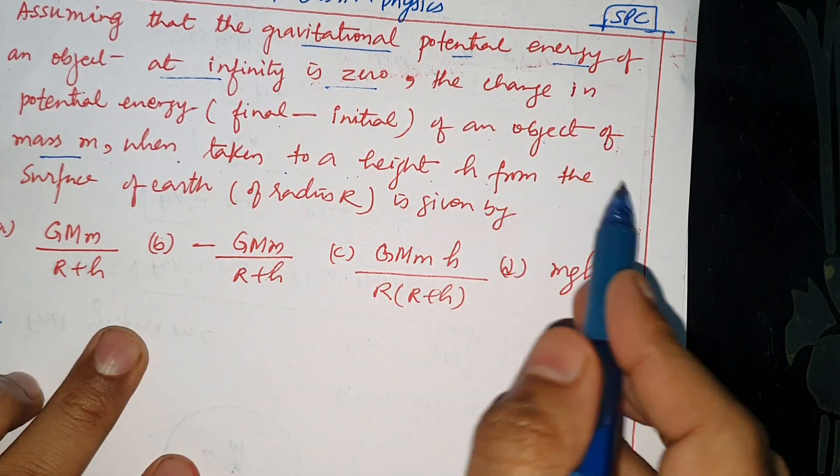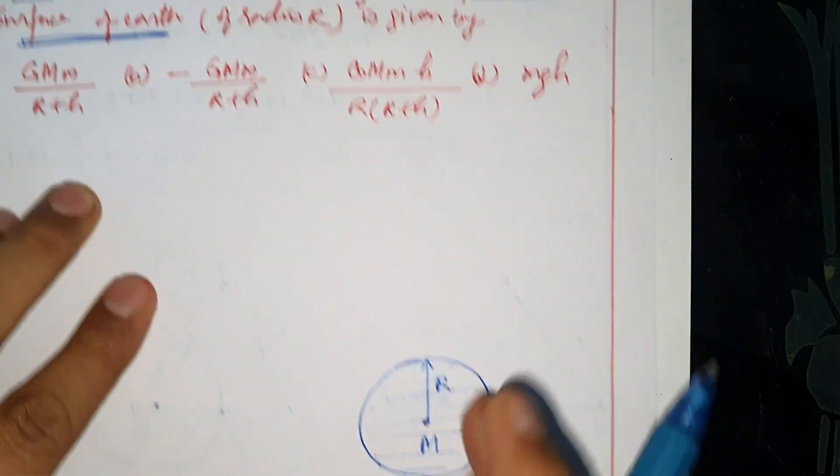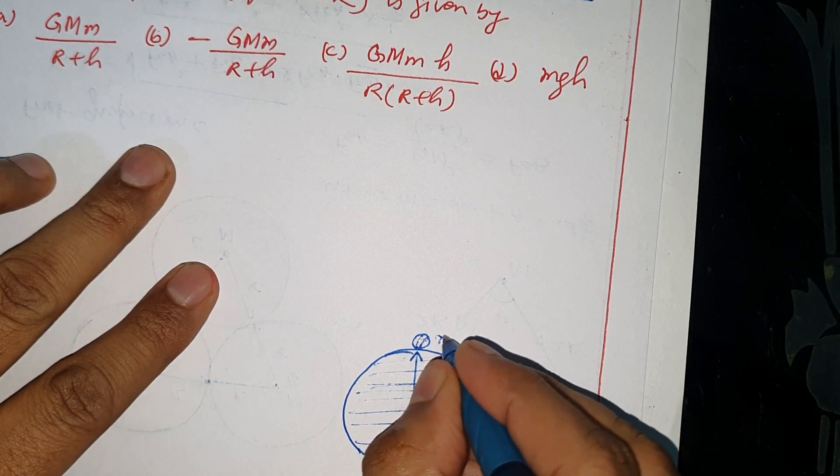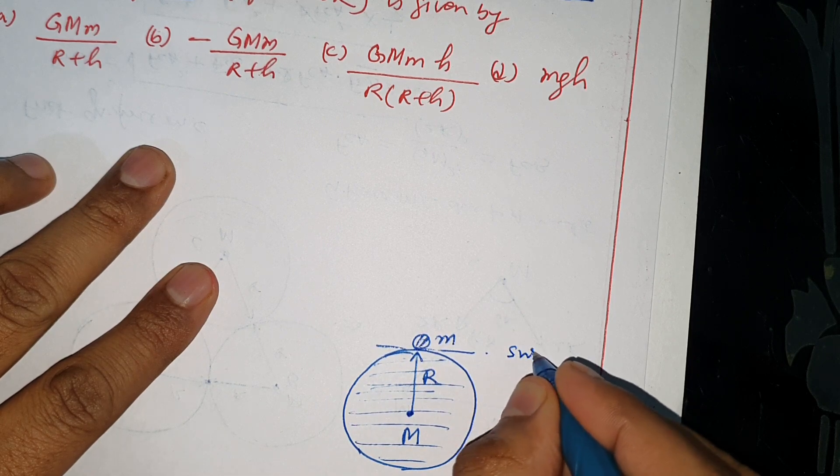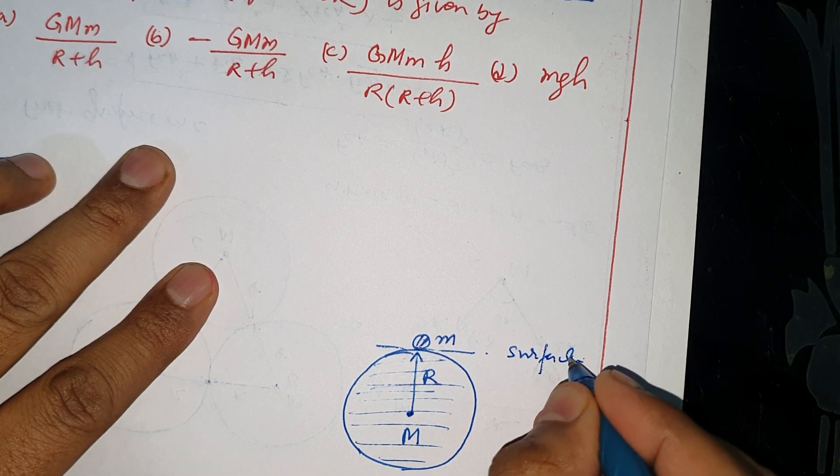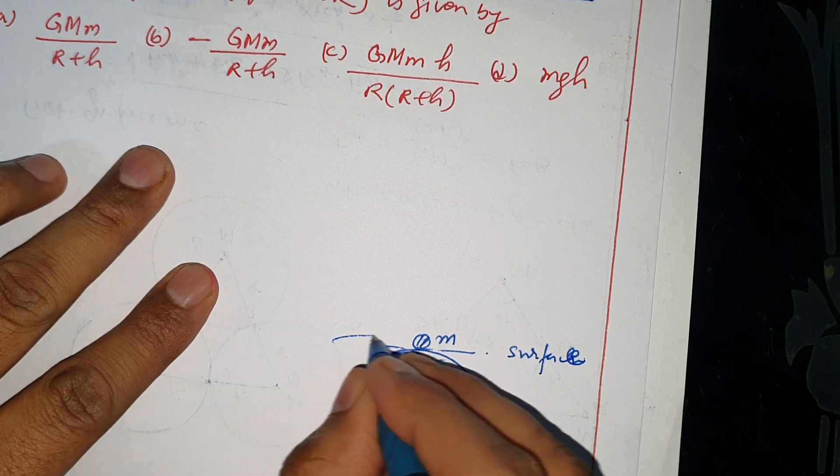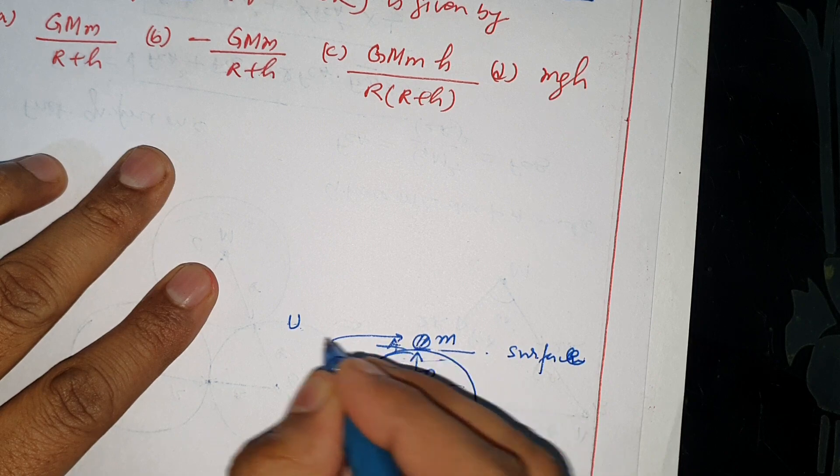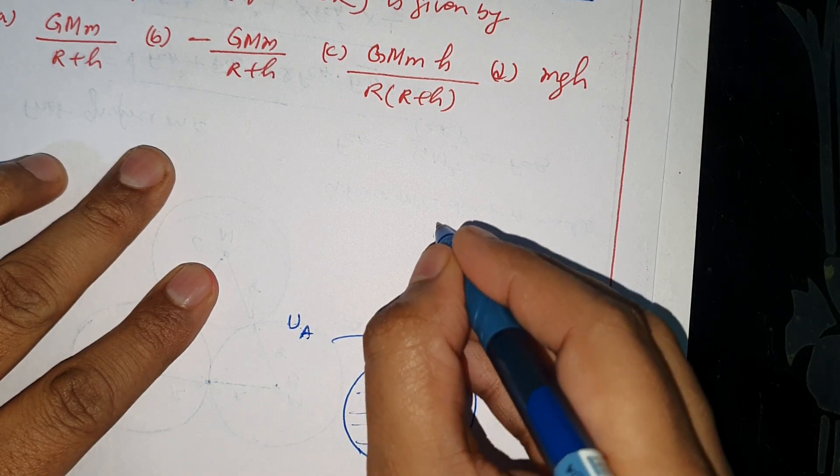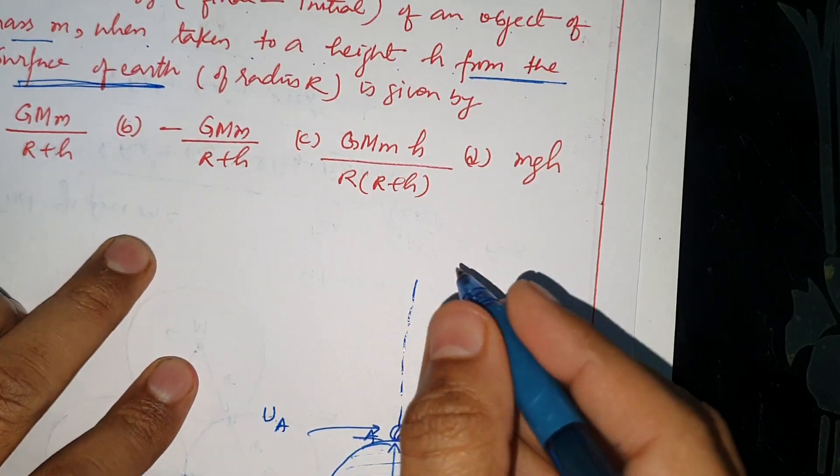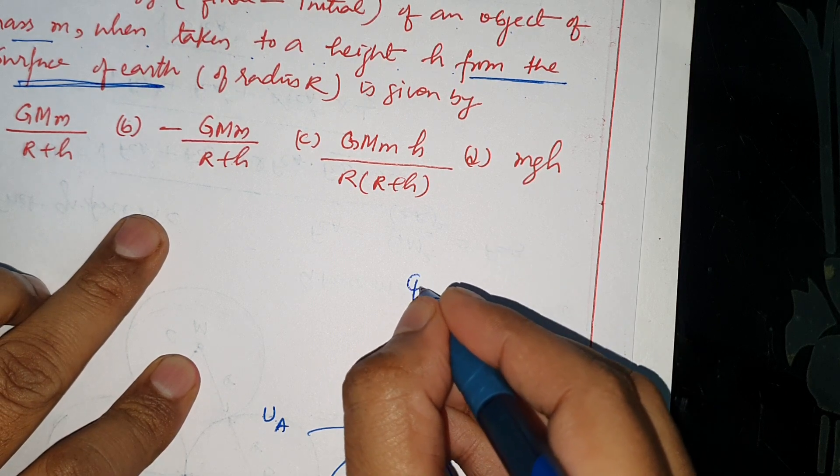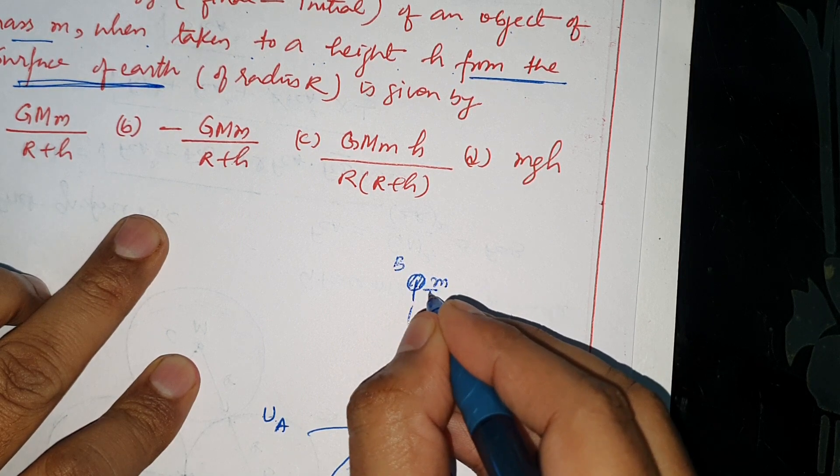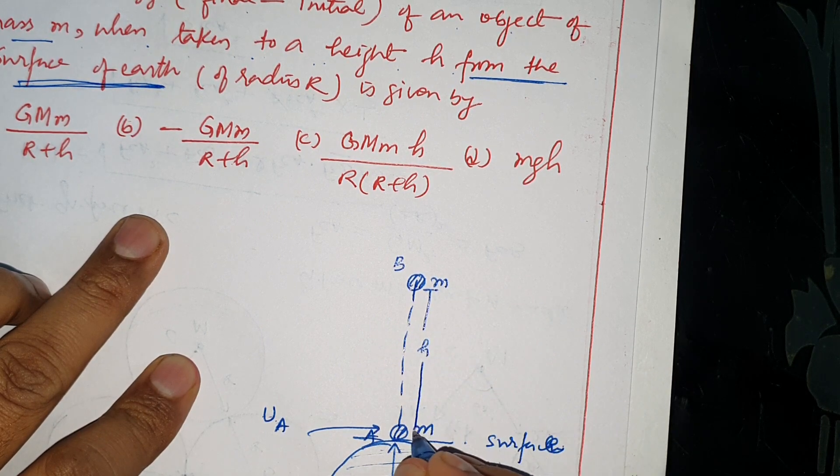When taken to height h from the surface of earth, the object is here at point A initially. The object of mass m is first at the surface, at point A on the surface, then we take it h height upward.